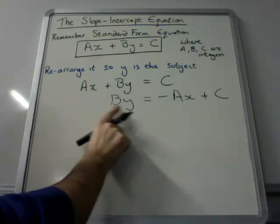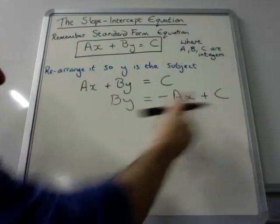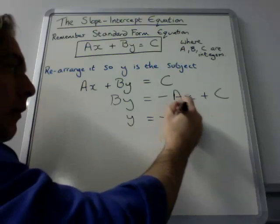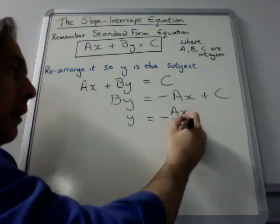Next I need to get rid of the B. So I need to divide every single item by B to keep the balance. My equation will then look like this.